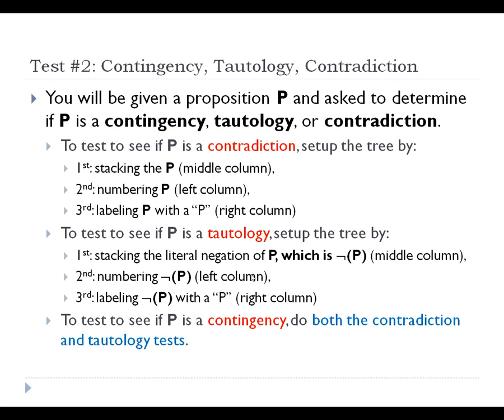There is another test to determine whether a single proposition is a contingency, tautology, or contradiction. There are really two sub-tests: a test to see if the proposition is a contradiction, and a test to see if the proposition is a tautology. If the proposition fails both of these tests, then through the process of elimination, you determine that it's a contingency. The simplest test is to test to see if the proposition is a contradiction.